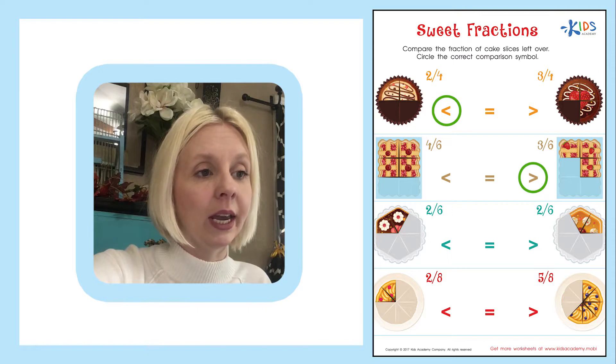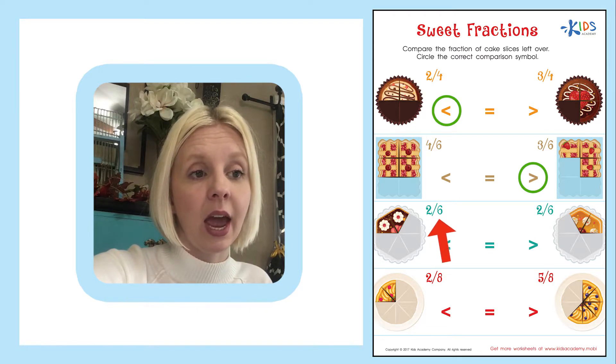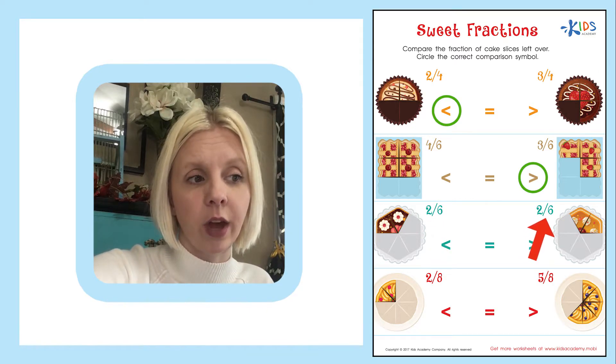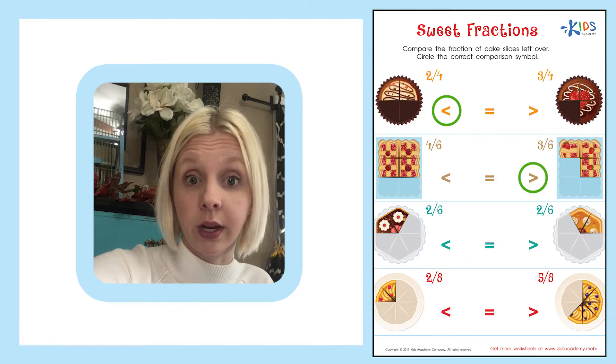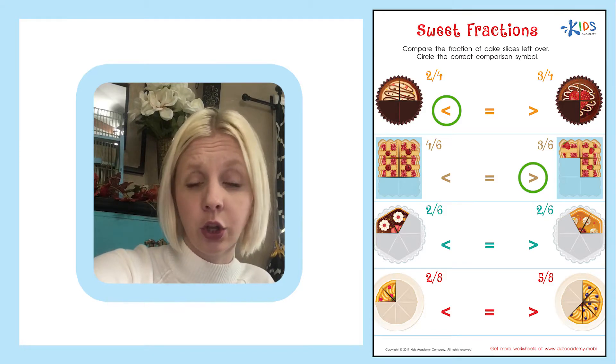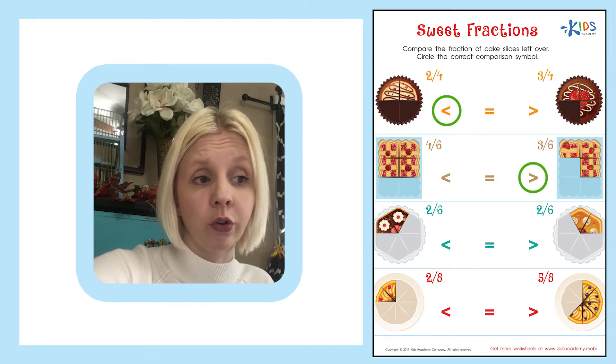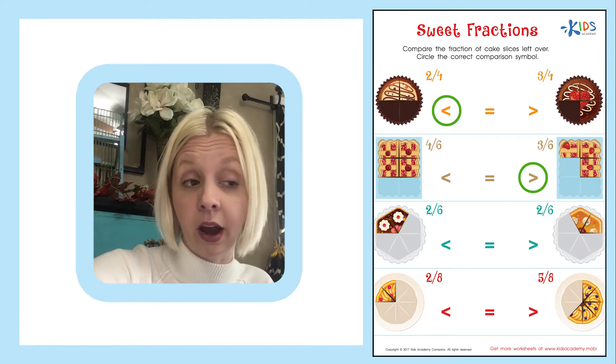The next one here is two-sixths and two-sixths. That means there's two pieces of the cake here in this one and there's two pieces of the cake here in this one. Looking at it, they're both the same. So there's not one that's greater than the other.